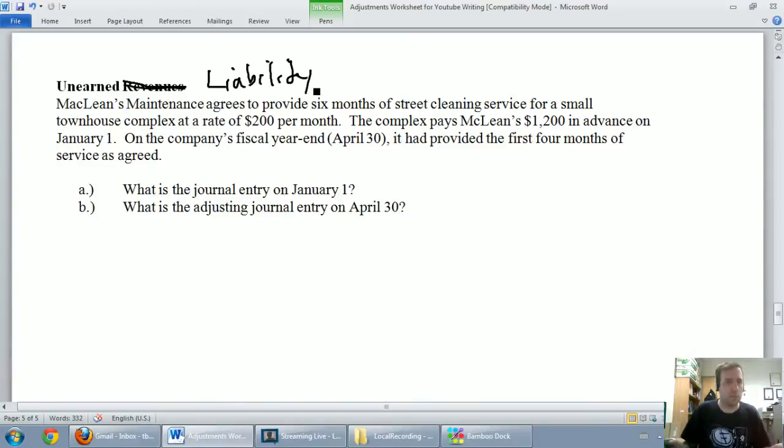So what I'd like to do is go through this problem and we'll look at how it works. McLean's Maintenance agrees to provide six months of street cleaning service for a small townhouse complex at a rate of $200 per month. The complex pays McLean's $1,200 in advance on January 1st. The company's fiscal year end is April 30th and at that time it had provided the first four months of service as agreed. So, record the journal entry on January 1st and the adjustment on April 30th.